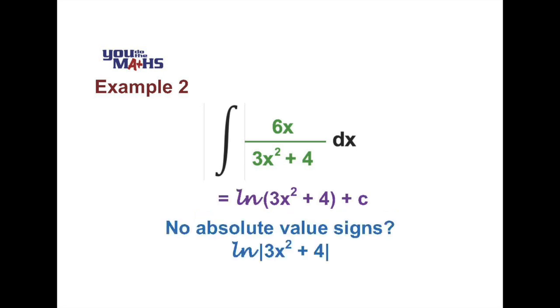Now normally what we do as a matter of routine is put absolute value signs around the expression inside the log, because the log is only defined for values greater than 0. But in this case you can see inside the expression we've got x squared which will always be non-negative. We've multiplied that by 3 and then we've added 4. So the expression 3x squared plus 4 will always be greater than or equal to 4. We don't need the absolute value signs in this case.